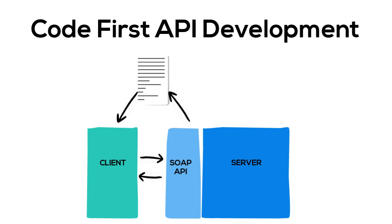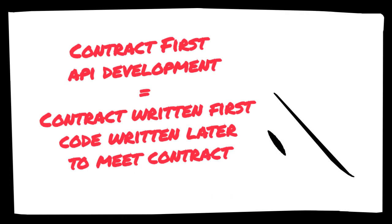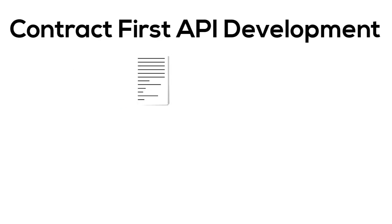However, software development is not catering. Rather than a code first approach, contract first API development has become increasingly popular in recent years. This is where the contract is written first and then the code is written to meet the contract. Although SOAP-based APIs could use this approach, it is more often used in conjunction with RESTful APIs. The development of the OpenAPI specification for describing RESTful APIs has helped greatly in this.